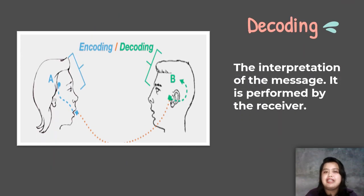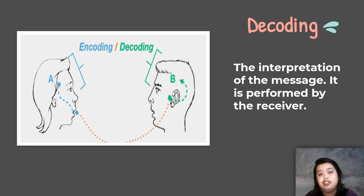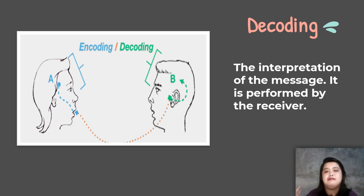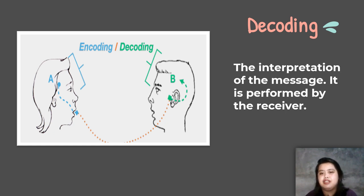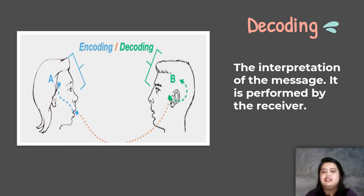After that, we have decoding. What is the difference between encoding and decoding? Encoding is done by the sender — they decide how to convey their thoughts and how to relay their information to the receiver. Decoding, on the other hand, is done by the receiver. That's the interpretation of the message — how the receiver interprets what the sender said, did, or showed.